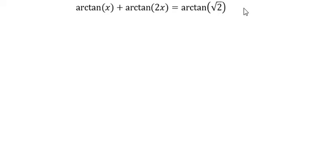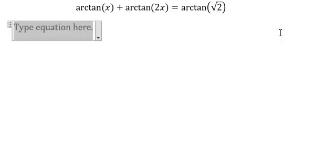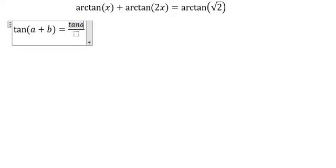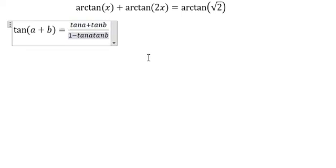We need to use this formula: tan of a plus b equals tan a plus tan b over 1 minus tan a tan b. So we will use this situation, we put the tan on both sides.